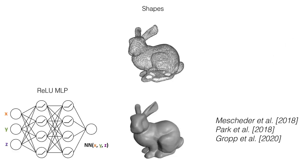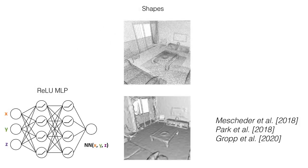While ReLU neural networks are capable of representing simple objects, such as this Stanford bunny, they fail to encode complex or large scenes with fine details, such as this room-scale environment.